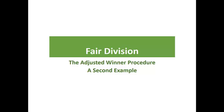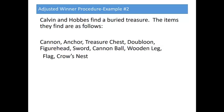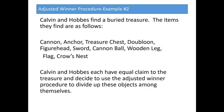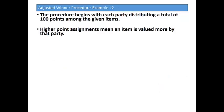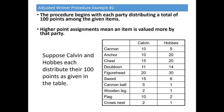In this video we will look at a second example of the adjusted winner procedure. Suppose that Calvin and Hobbes find a buried treasure. The items they find are: a cannon, an anchor, a treasure chest, a doubloon, a figurehead, a sword, a cannonball, a wooden leg, a flag, and a crow's nest. Calvin and Hobbes each have equal claim to the treasure and decide to use the adjusted winner procedure to divide up these items. The procedure begins with each party distributing a total of 100 points among the given items, where higher point assignments mean an item is valued more by that party. Suppose Calvin and Hobbes each go into separate rooms and divide up their 100 points as given in the table.